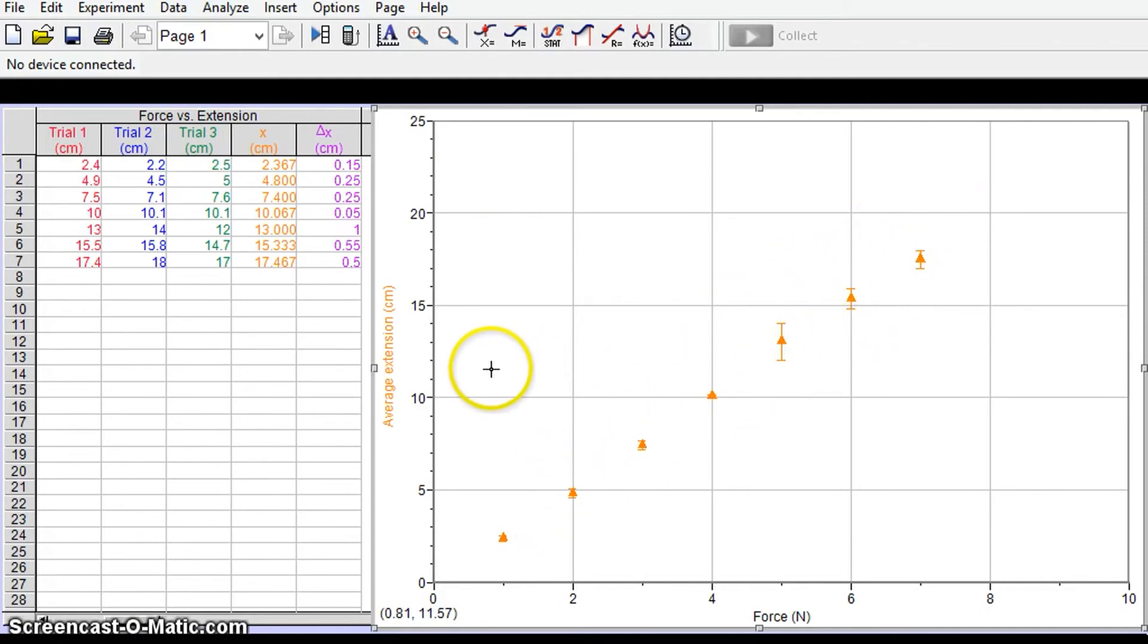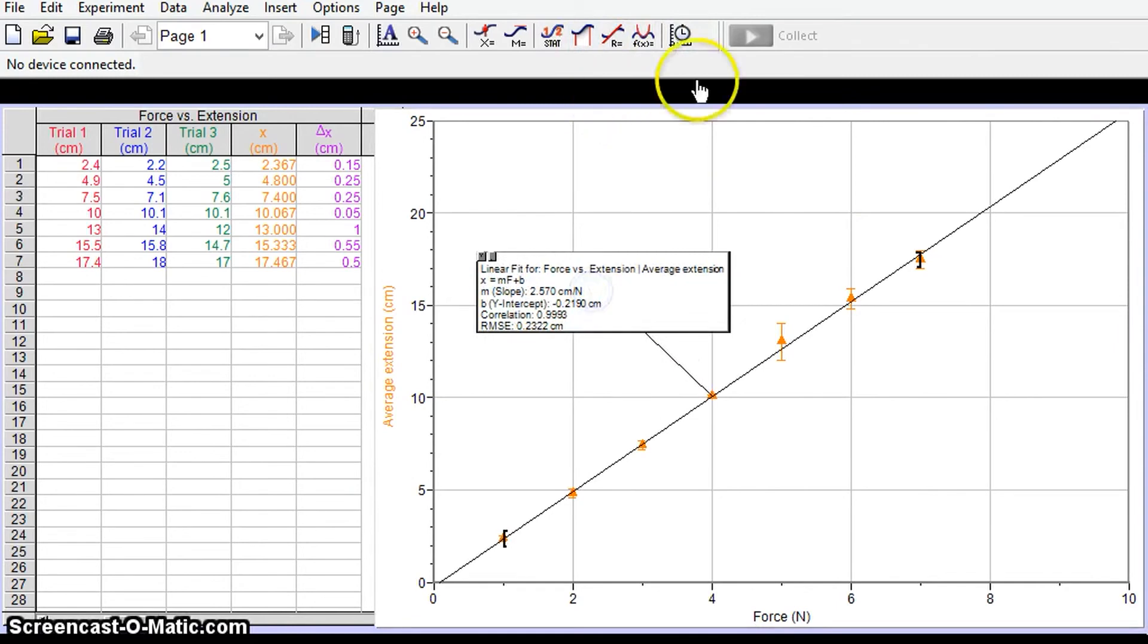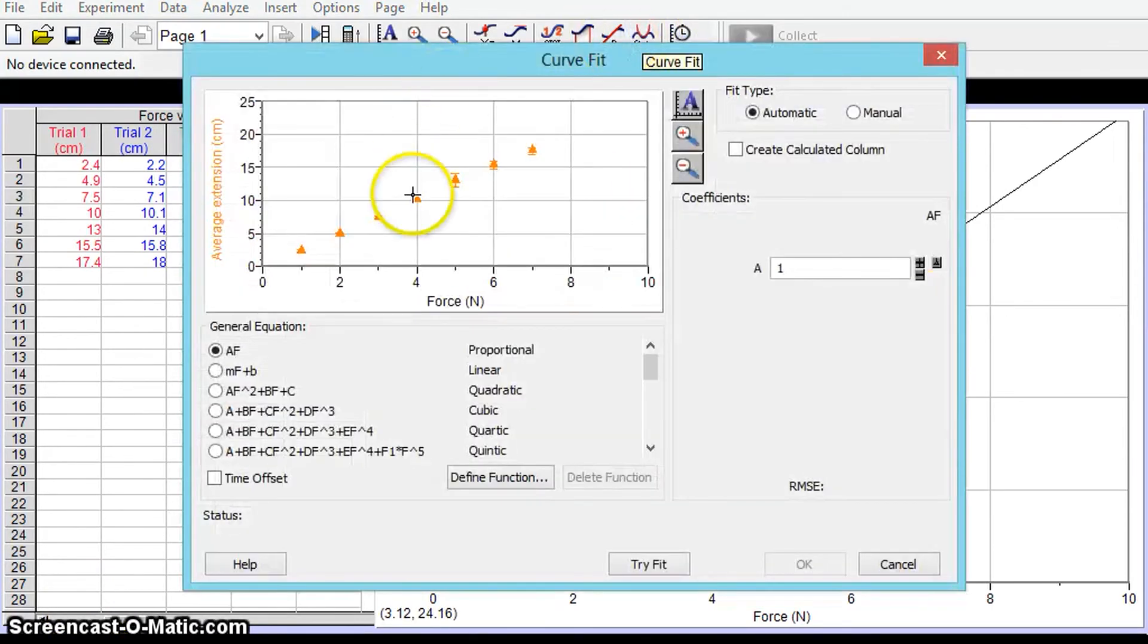From this point now of course we can go ahead and add our linear trend line and we can add maximum and minimum fits as well. Let's add a maximum fit trend line so we're going to put a linear one there.